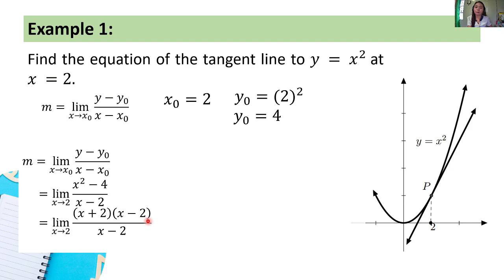To check, you can use the FOIL method — the product should equal x² minus 4. So we have (x + 2)(x − 2) all over (x − 2). We can cancel out (x minus 2), leaving the limit of (x + 2) as x approaches 2.